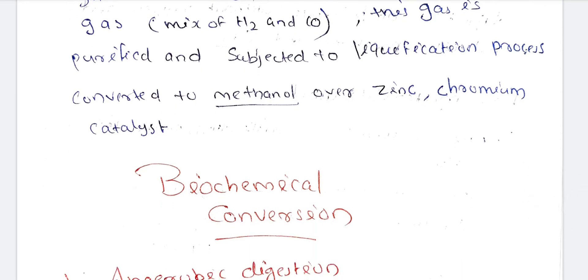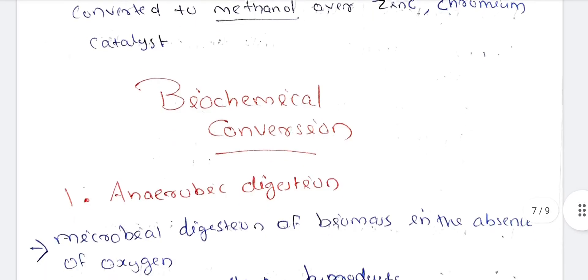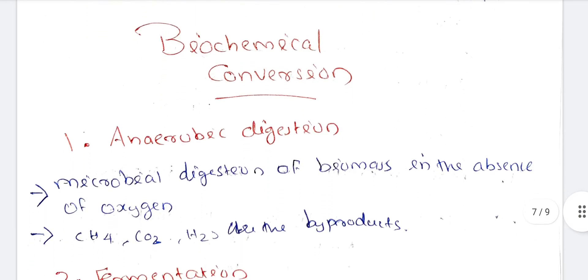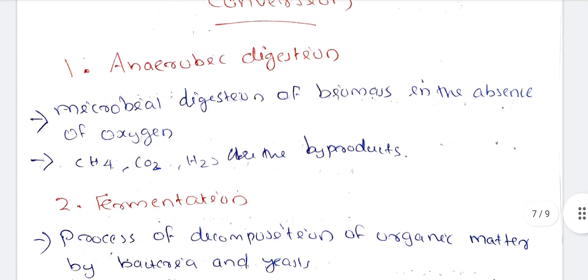This is a biochemical conversion. In biochemical conversion, anaerobic digestion is microbial digestion of biomass in the absence of oxygen. The byproducts are methane, carbon dioxide, and hydrogen sulfide. Hydrogen sulfide is harmful. The methane (CH4) is used for cooking.